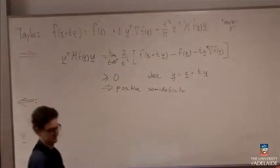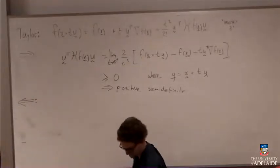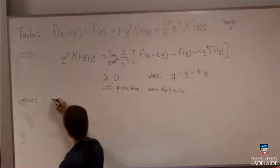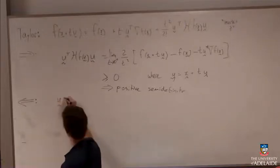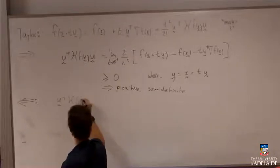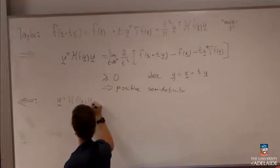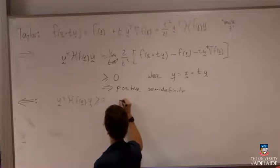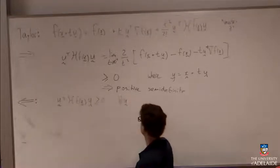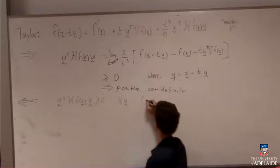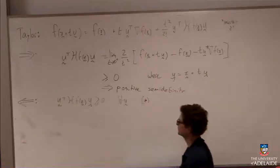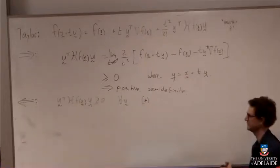Going back in the other direction. So here I'm going to assume this. I'm going to assume that u transpose Hf of u is greater than zero for all u. So that's what it means to be positive semi-definite.